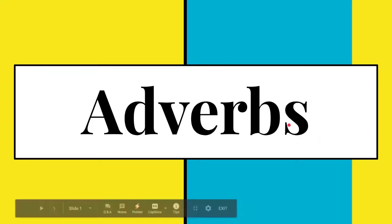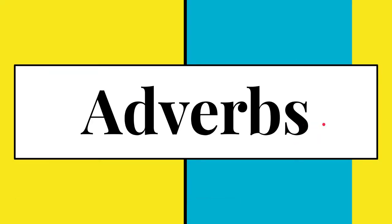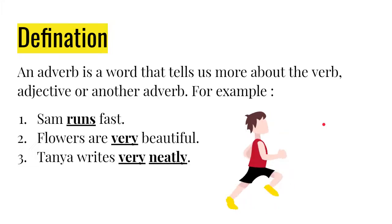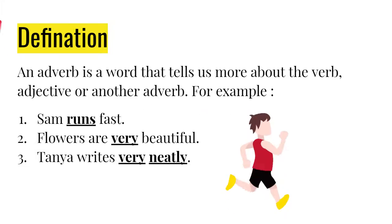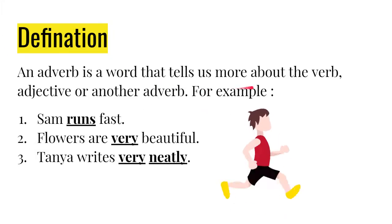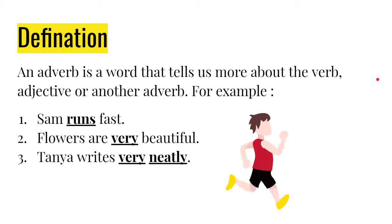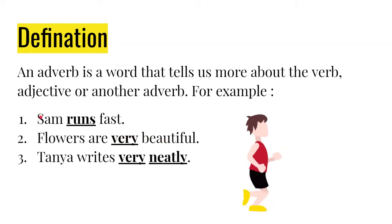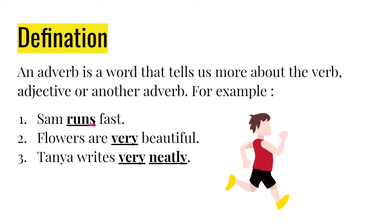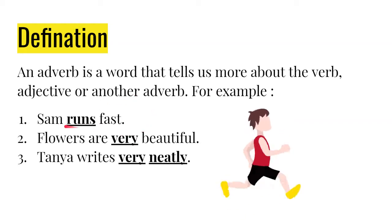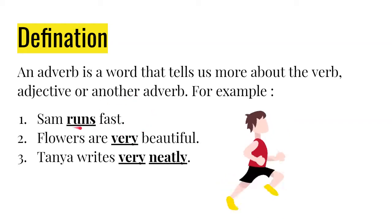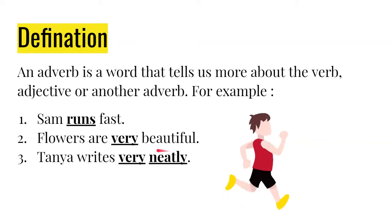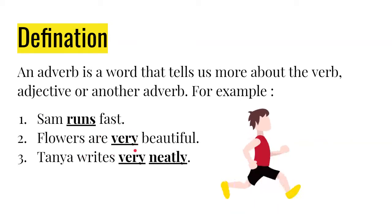Good morning everyone. Today we will learn about adverbs. Definition: an adverb is a word that tells us more about the verb, adjective, or another adverb. Let us see the examples. Sam runs fast — here 'fast' is the adverb that tells us more about the verb 'runs.' Flowers are very beautiful — here 'very' is the adverb that tells us more about the adjective 'beautiful.'